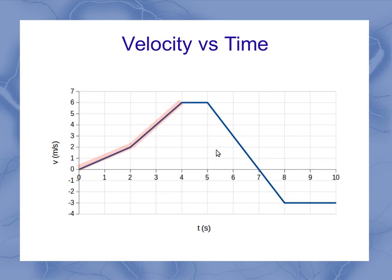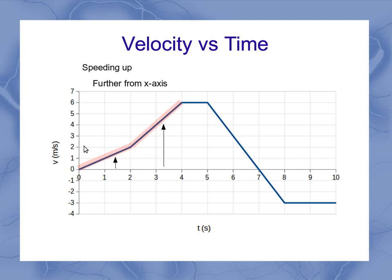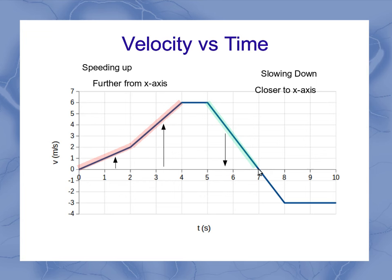Now we can also look at the concept of where I'm moving further away from the axis. Both of these segments where I had a positive acceleration, I'm moving further away from the x-axis, and that means I'm speeding up. I started not moving, and as I go along in time, I'm moving faster and faster because I'm further and further away from the x-axis. Now any place where you're moving closer to the x-axis, that means you're slowing down for that segment. So I started with a fairly fast forward-moving velocity and came all the way down to where I was not moving at all.